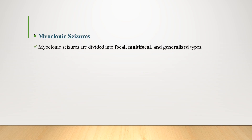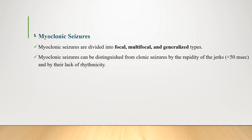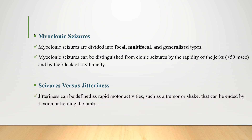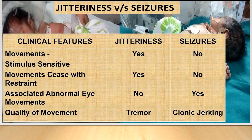Myoclonic seizures are divided into focal, multifocal, and generalized types. They can be distinguished from clonic seizures by the rapidity of the jerks and by their lack of rhythmicity. To differentiate seizures from jitteriness: jitteriness can be defined as rapid motor activities such as tremor or shaking that can be stopped by flexion or holding the limb. Jitteriness is induced by stimulation, can be terminated by restraint, and is not associated with abnormal eye movement. Seizure, in contrast, is associated with abnormal eye movement, is not induced by stimulation, and does not disappear with restraint.